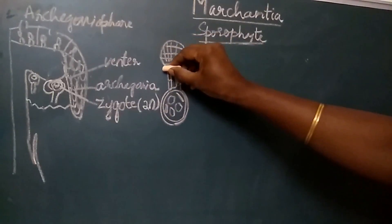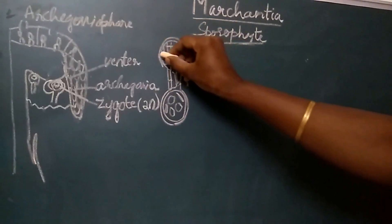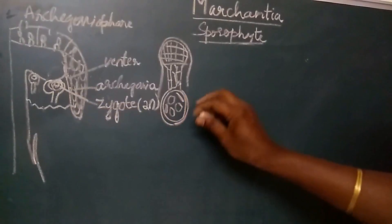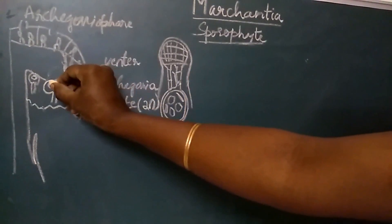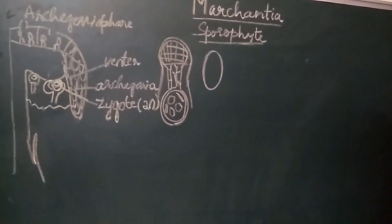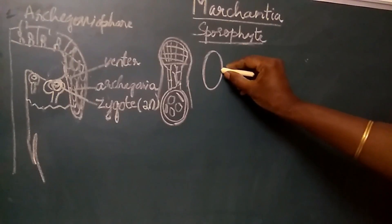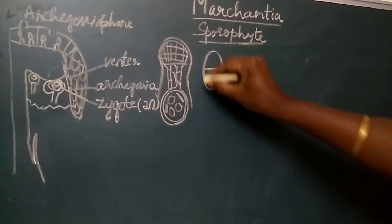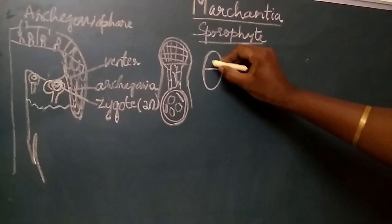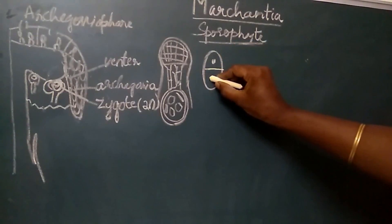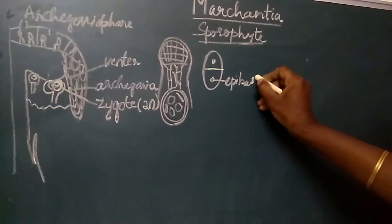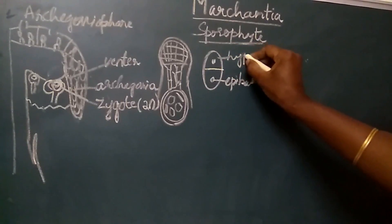This complete structure develops from a single zygotic cell. Now we will see how the zygotic cell divides to form this complex structure. This is the zygotic cell, which is the starting stage for the sporophytic generation. The first division in the zygotic cell is a transverse division which results in the formation of an upper cell and a lower cell. The upper cell is called the epibasal cell and the lower cell is called the hyperbasal cell.